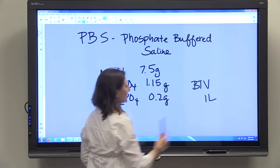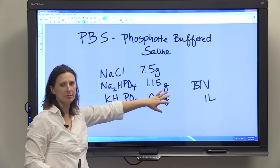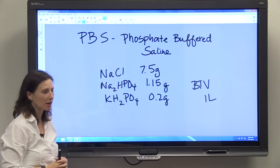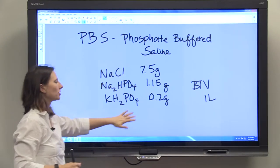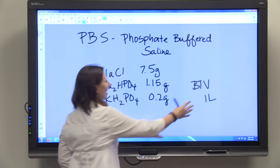and you know that you're supposed to bring to a final volume of one liter, you can add these solids into less than one liter. You're going to make sure that they dissolve because that's going to change the volume before you add that final volume.